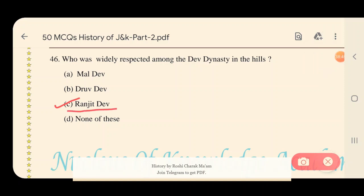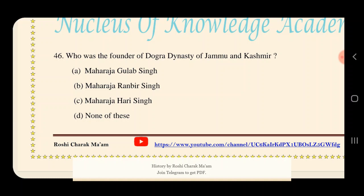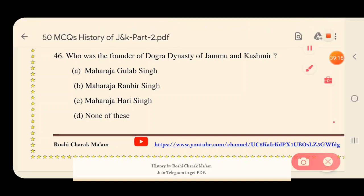Question 47: Who was the founder of the Dogra dynasty of Jammu and Kashmir? Options: A) Maharaja Gulab Singh, B) Maharaja Ranveer Singh, C) Maharaja Hari Singh, D) None of these. The answer is A — Maharaja Gulab Singh was the founder of the Dogra dynasty of Jammu and Kashmir.